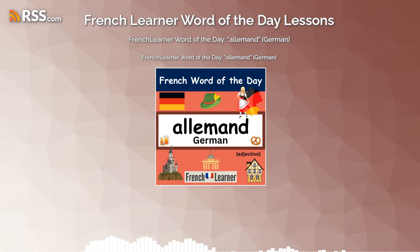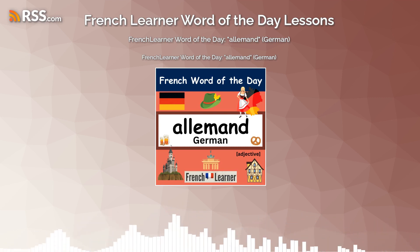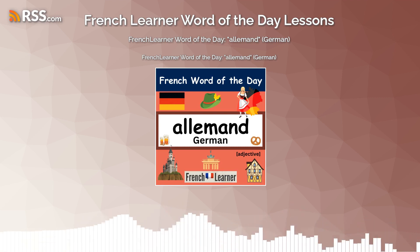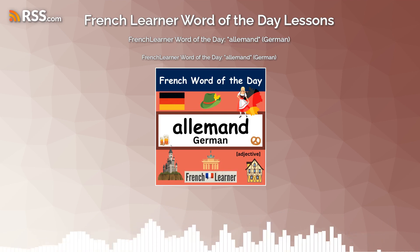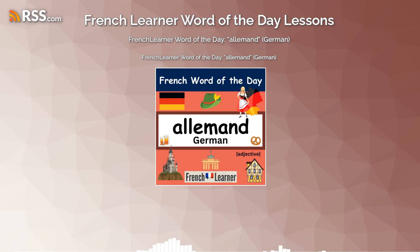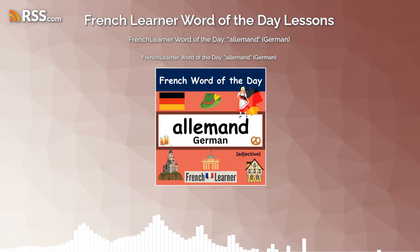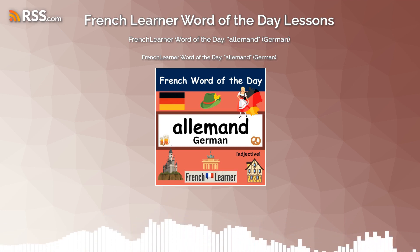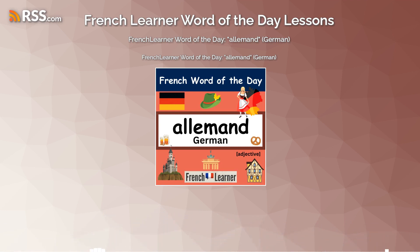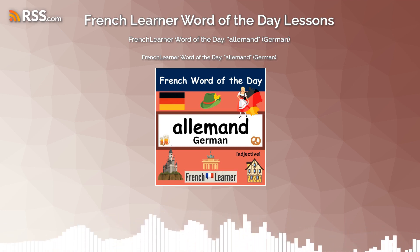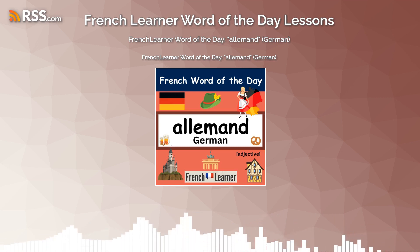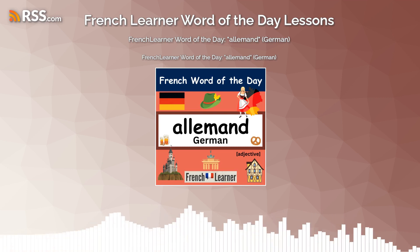Martin is a German man. Martin est un homme allemand. Notice I'm pronouncing German allemand in the standard form. I could additionally say Martin est un homme allemand.